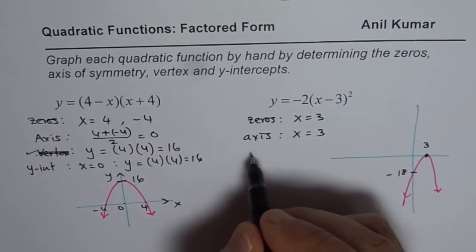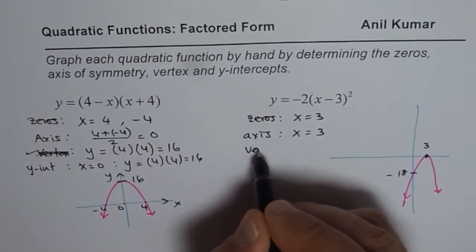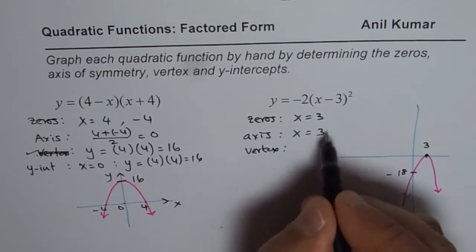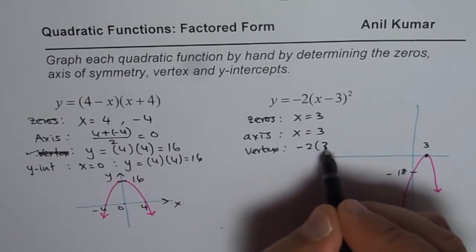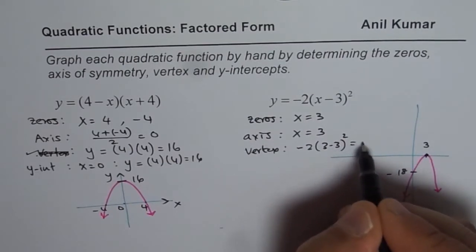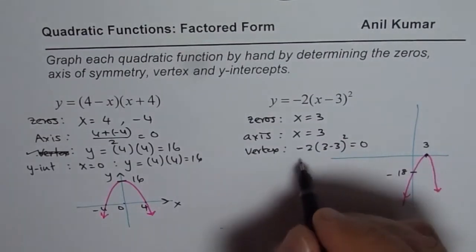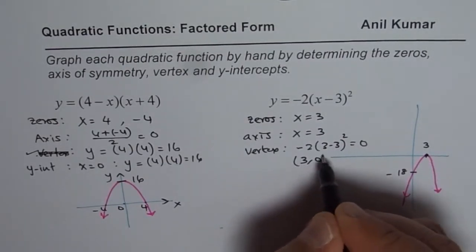To find the value of vertex, we need to substitute the x in the equation. So we get -2(3 - 3)². That gives us 0. So the vertex, as you can see, is at (3, 0).